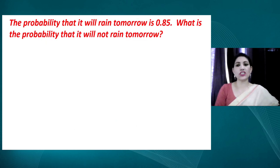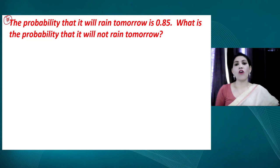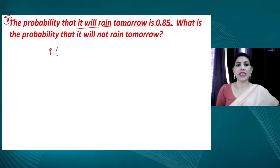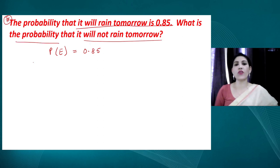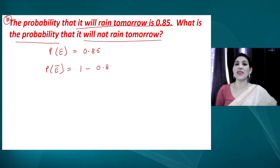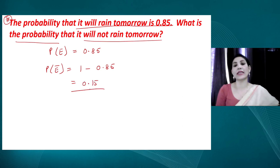Next question: The probability that it will rain tomorrow is 0.85. Let event E represent that it will rain tomorrow, so probability of E is 0.85. We are asked to find the probability that it will not rain tomorrow — that is, probability of not-E. Since the sum of an event and its complement is always 1, probability of not-E equals 1 minus 0.85, which is 0.15.